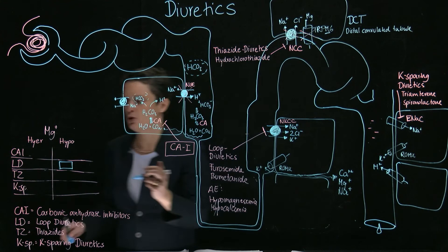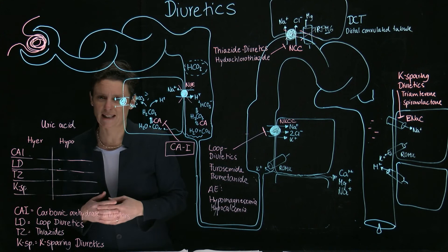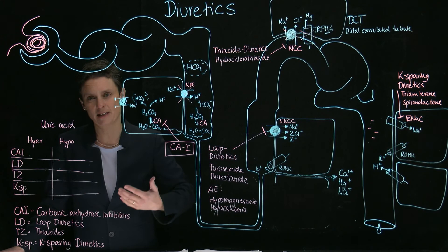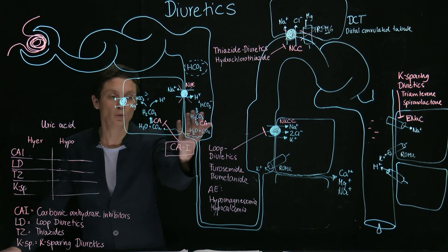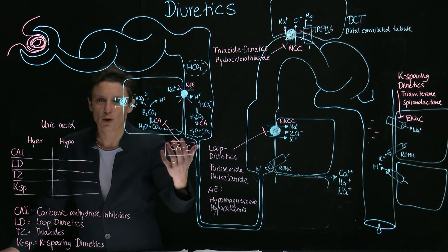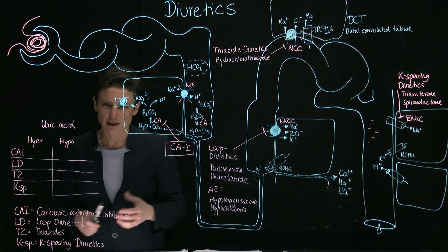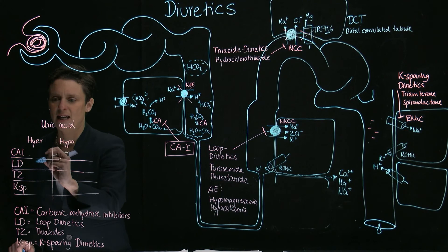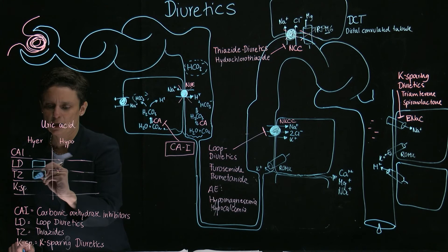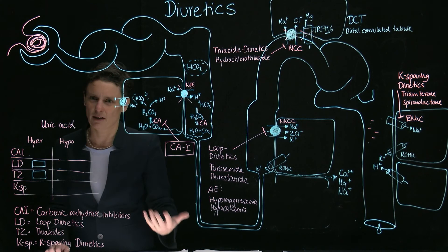Regarding uric acid, it's important to realize that highly efficacious diuretics like thiazides and loops lead to volume depletion. As a consequence, there's more sodium reabsorption in the proximal tubule, and therefore more reabsorption of all solutes including uric acid. These highly efficacious diuretics can therefore lead to hyperuricemia, meaning patients on loops and thiazides can develop a gout attack.